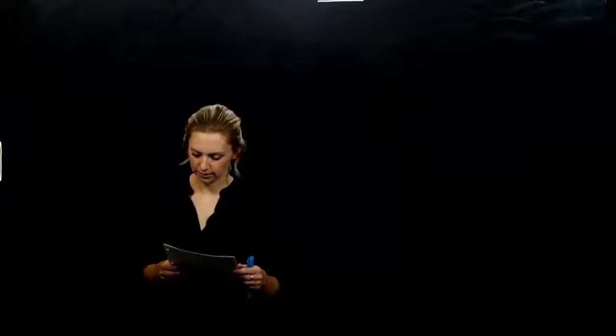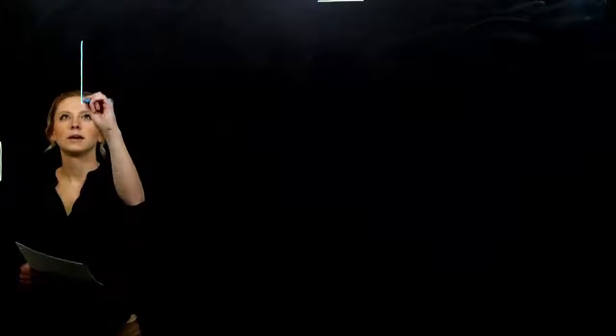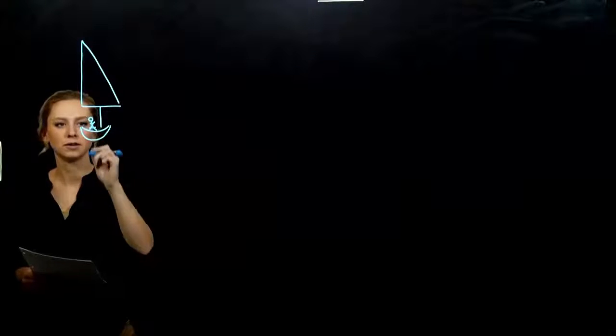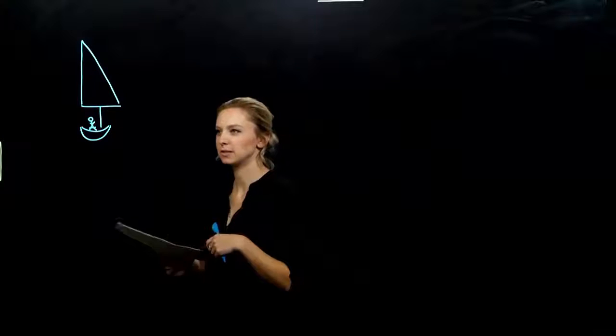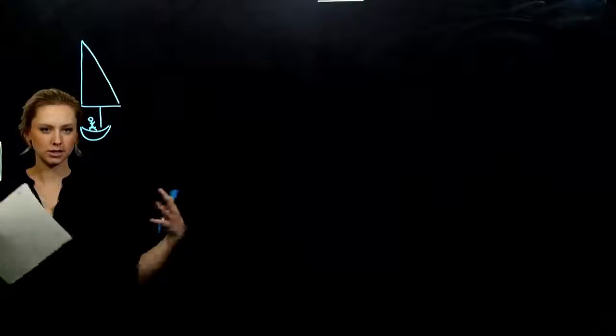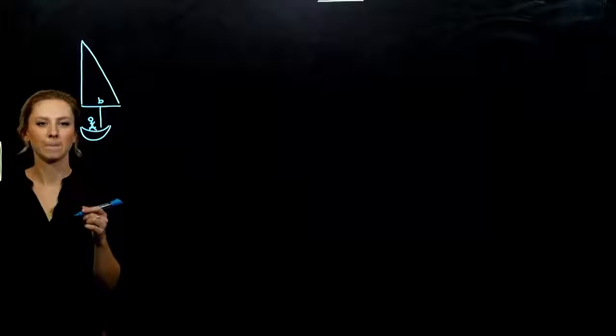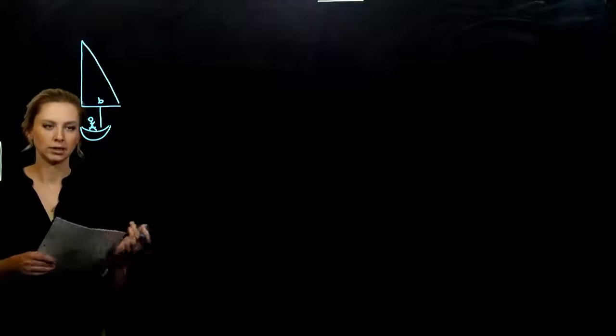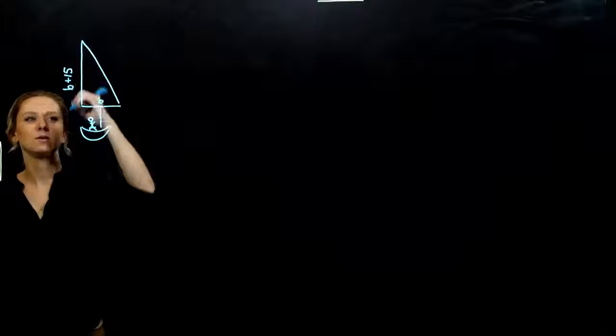The next one is for you to try — we're dealing with triangles again. The triangular mainsail on Stacy's sailboat has an area of 125 square feet. The height of the sail is 15 feet more than the base. Find the height and base of the sail. Draw a picture — the sail on the sailboat. The height is 15 feet more than the base, so everything is in terms of the base. Let the base be B, so the height is B + 15.